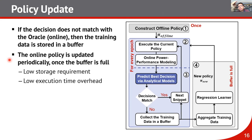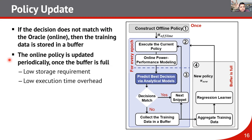From the power-performance model we obtain the oracle — the best decision at that particular snippet. If the best decision doesn't match the decision taken, the training data is stored in a buffer. We store 100 training samples at a time, and when the buffer is full we retrain the policy. Because we store only 100 data points, the storage requirement and execution time overhead are both very low.